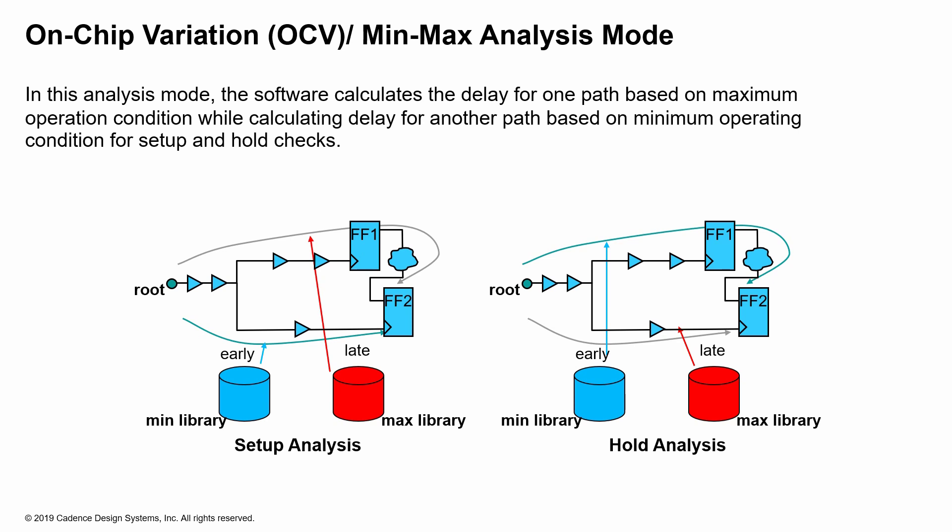In the on-chip variation mode, it's natural to assume that one buffer is in one part of the chip whereas another buffer is in another part of the chip, and therefore you're actually taking the delay values for each buffer from different libraries. This variation in the delays of the buffers from different regions of the chip is captured via these libraries, because the libraries are characterized accordingly and therefore can be used for those purposes.